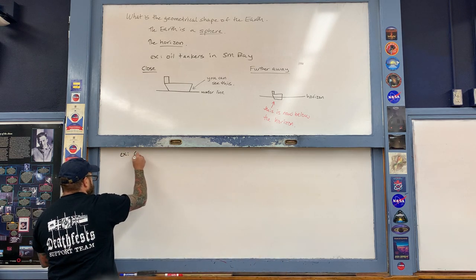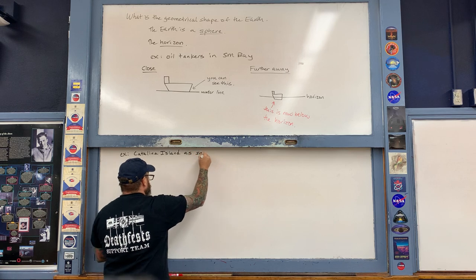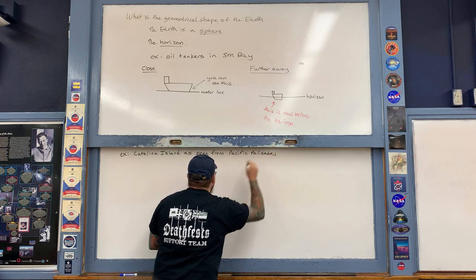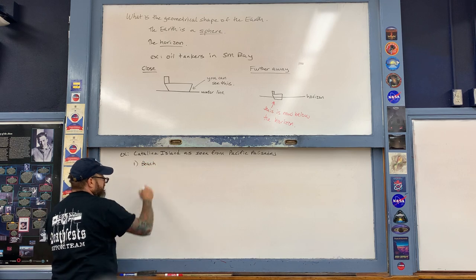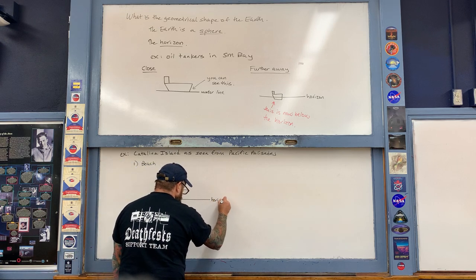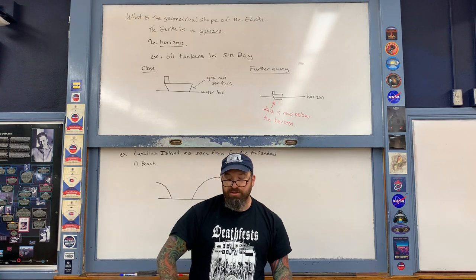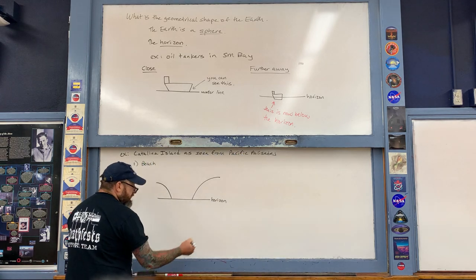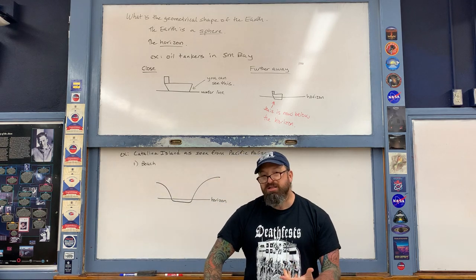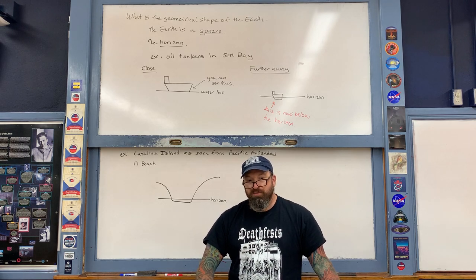As seen from Pacific Palisades, you go down to the beach and see the horizon line with what appear to be two hills — one on the left, one on the right — looking like two land masses separated by water. However, those two land masses are actually a single land mass connected by a small strip of land just a couple of feet above sea level: the isthmus of Catalina Island. From the beach, you cannot see that portion of the island — it's below the horizon.